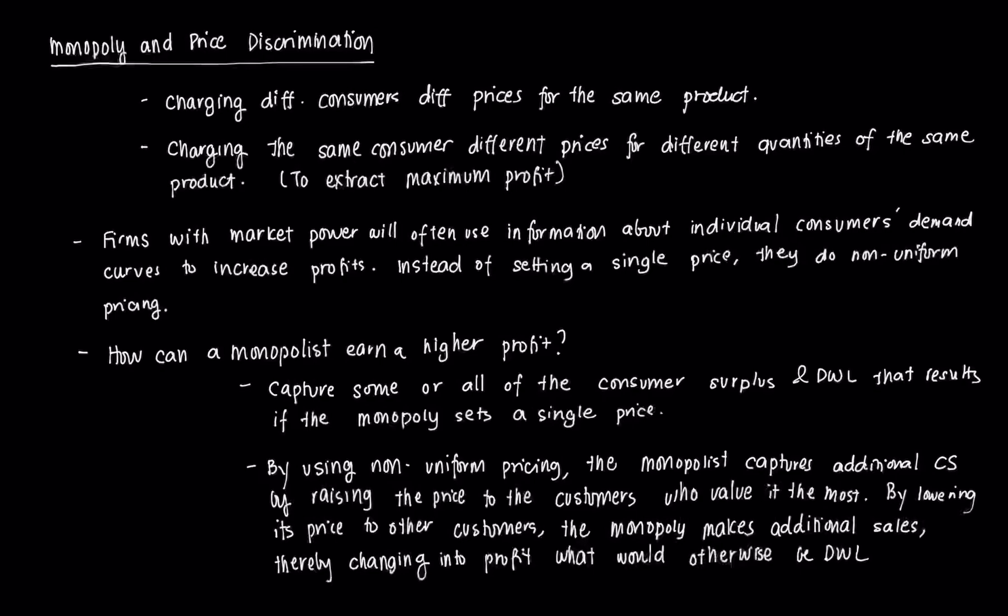In the past few videos we've been discussing how a monopoly behaves compared to a perfectly competitive market and what are the general characteristics of a monopolist. Now we're going to explain a practice that some monopolists tend to do, which is price discrimination, an interesting and key concept in microeconomic theory and the theory of competition.